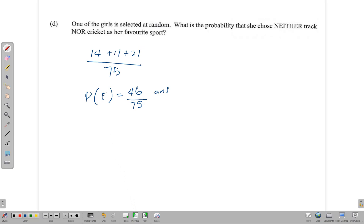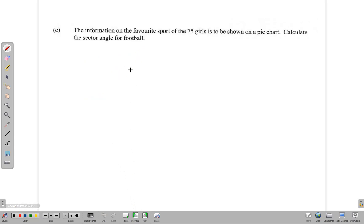We move to the next part where it says: The information on the favorite sport of 75 girls is shown in a pie chart. Calculate the sector angle for football. Remember, 21 girls liked football.